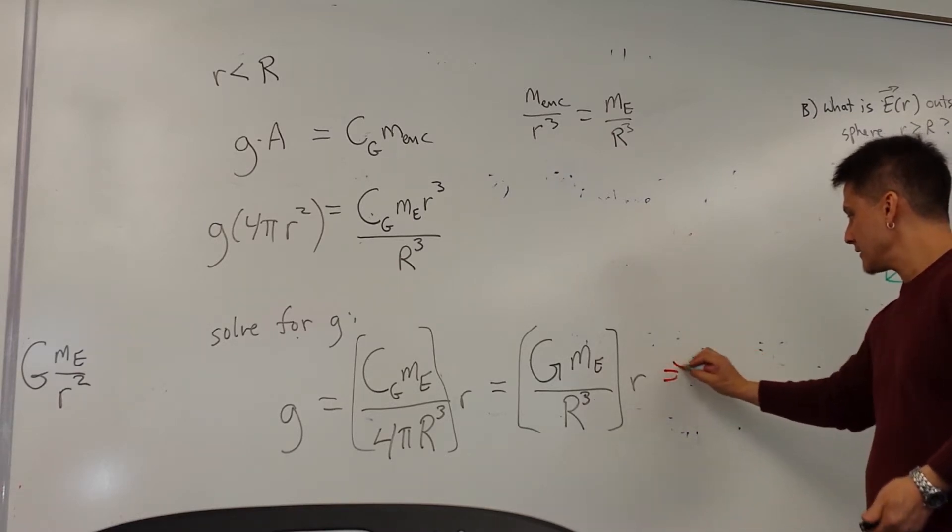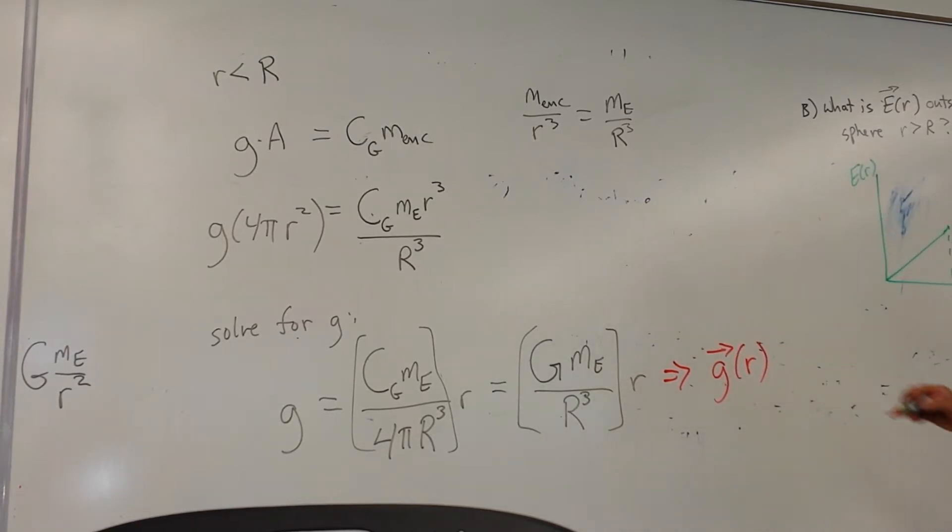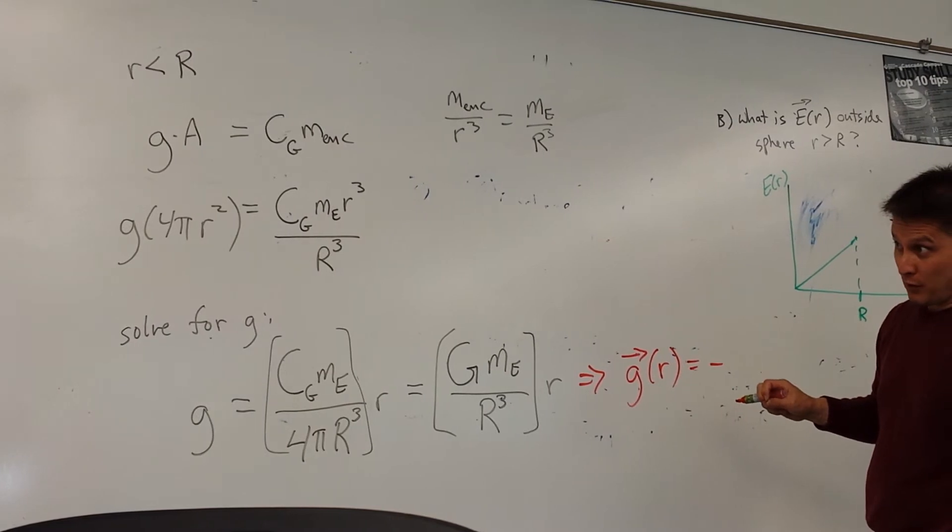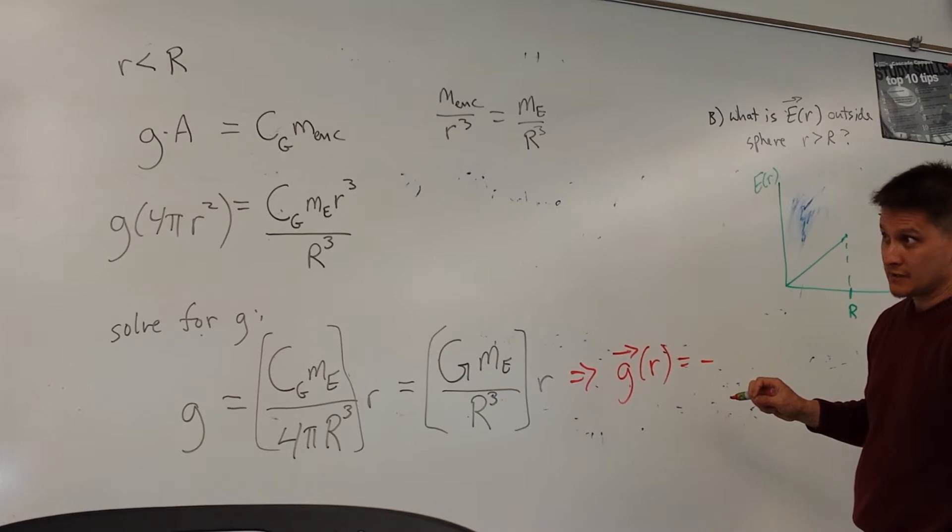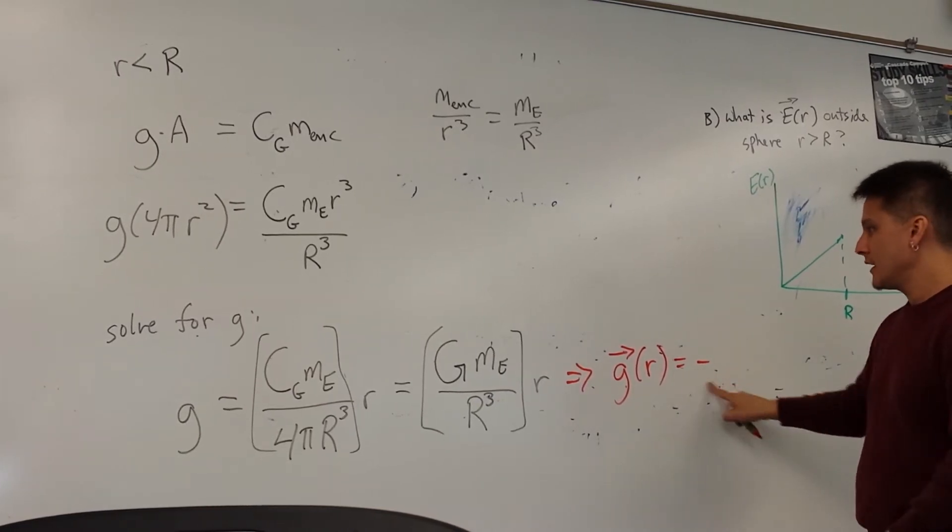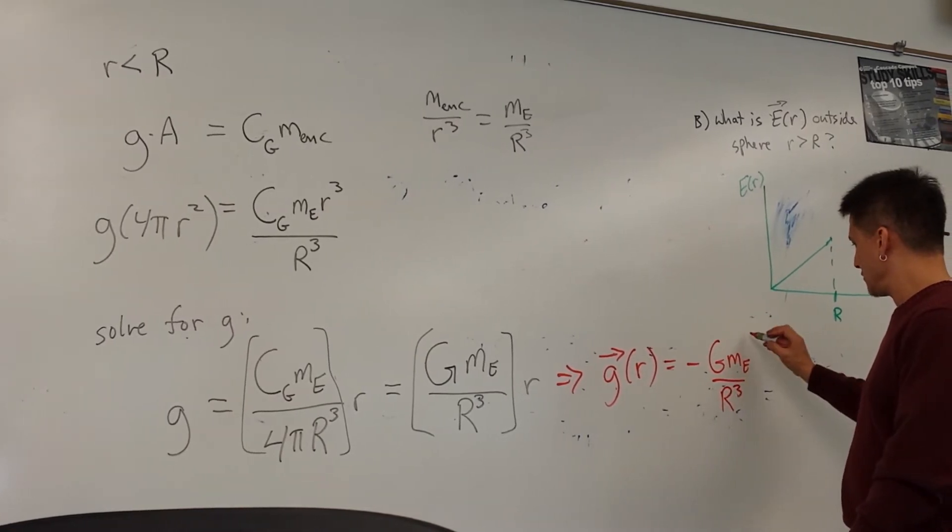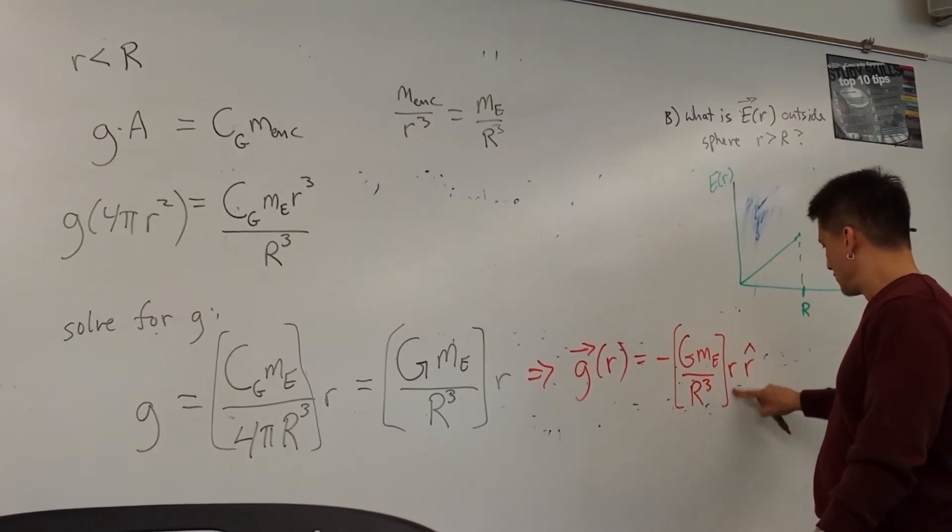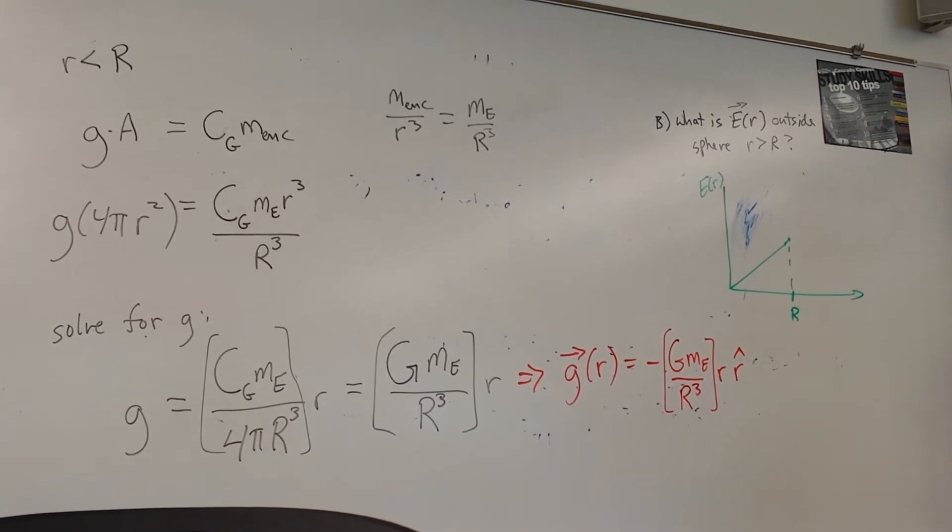And if we express the gravitational vector as a function of R, then we could say that it's going to be minus. One problem is this is repulsive, not attractive. So there's probably a minus built in here. The G is opposite the direction. Yeah, it's just a negative.